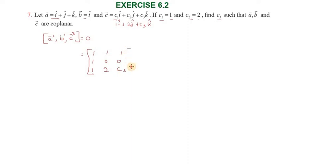So the determinant form to find c3 value: 1 into 0, so the total is 0. Then minus 1 into negative 1 into c3 minus 0.